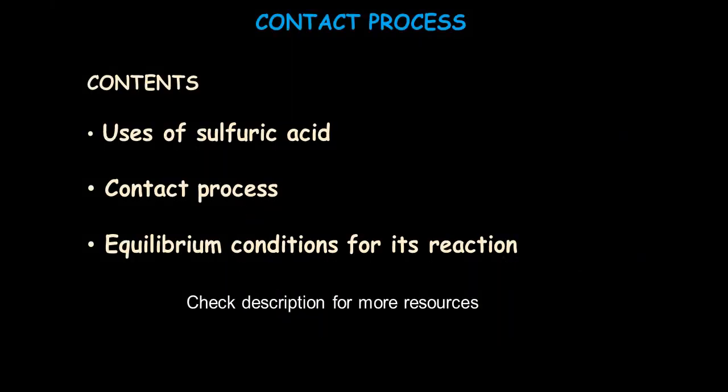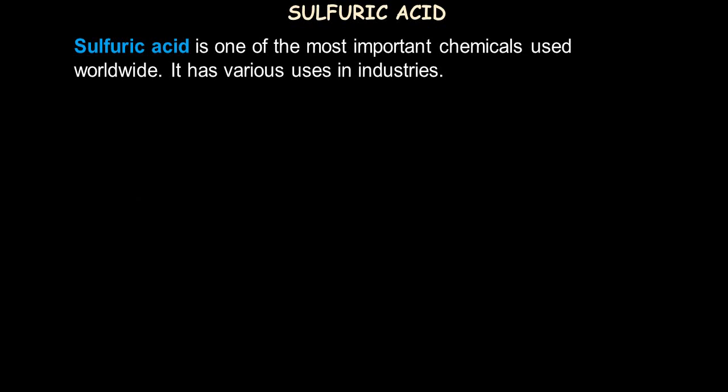In this video we are going to discuss one of the important topics of IGCSE chemistry: the uses of sulfuric acid, the contact process — that is the process of making sulfuric acid which is widely used worldwide — and the equilibrium conditions needed for one of its reactions involved in the contact process.